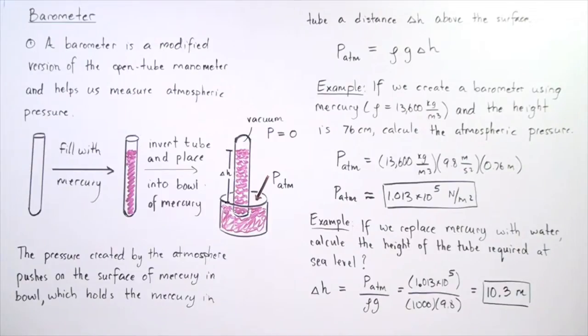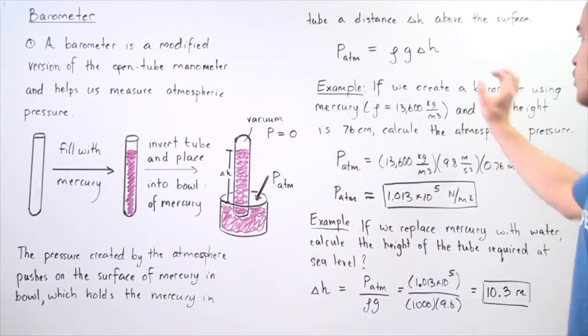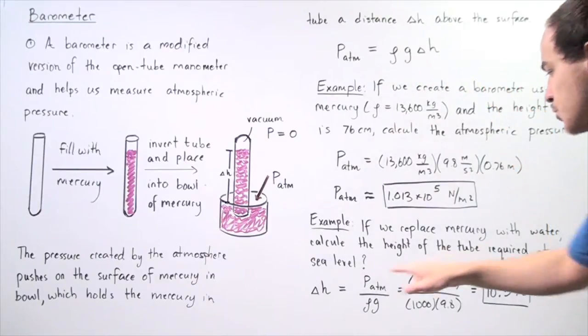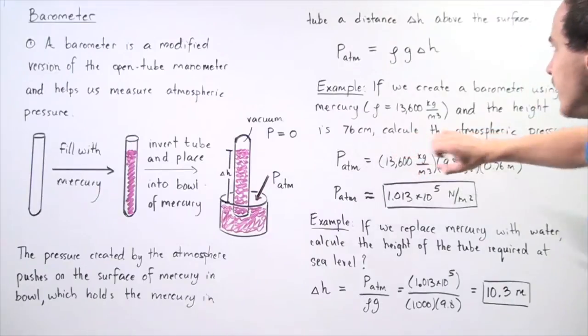To calculate the height of the tube at sea level, where the pressure at sea level has this quantity, we have to use this equation. We rearrange and we solve for change in H. Change in H is equal to the atmospheric pressure, this quantity, divided by the density of water, 1,000 kilograms per meter cubed,